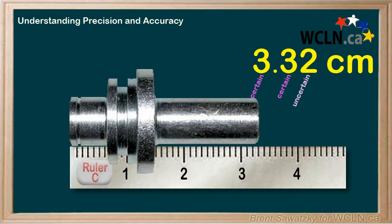Ruler C is very precise, like ruler B, but it doesn't seem to be accurate. Maybe the ruler was manufactured poorly, or maybe it got warped in some heat — we don't know. But the precision looks good; the accuracy is where the problem lies.